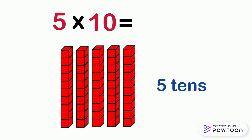To multiply 5 by 10, we should repeat number 10 five times. So we have 5 tenths. 5 times 10 equals 50.